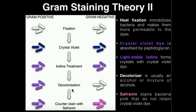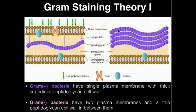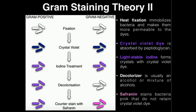We then use something called a decolorizer, which is usually a mixture of alcohols — typically ethanol and isopropyl alcohol in some proportion. The decolorizer is not able to remove the crystal violet dye from gram-positive bacteria, because it's a very thick peptidoglycan layer — the crystal violet dye really cannot get out effectively. However, in gram-negative bacteria, where the peptidoglycan layer is much thinner, the decolorizer has an easy time washing the crystal violet dye out.